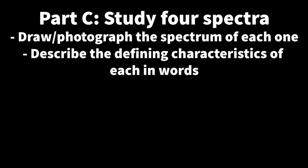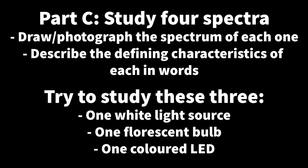In Part C, study four spectra at home using a CD or DVD. For each, draw the spectrum with pencil crayons or photograph it for your notebook, and describe in words the defining characteristics: is it a continuous spectrum or a line spectrum? Does it have a limited number of wavelengths or the full rainbow? Try to study at least one white light source, one fluorescent tube, and one colored LED — those will be three of your four — and choose something interesting for the fourth, like a lava lamp or light through colored glass. Don't use sunlight as it can damage your eyes, and if you use a tanning lamp, use safety goggles.